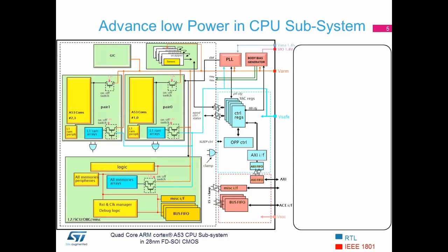An important thing to understand is that, unlike normal SoCs, CPUs are general-purpose processors, which means the load on the CPU may vary depending on the application. To achieve very high energy efficiency, we must have a varied range of frequencies and corresponding voltages so that we can optimize overall energy consumption. Therefore, we have extreme DVFS — dynamic voltage and frequency scaling. We can operate at 0.6 volts and achieve around 1 GHz performance, thanks to FTSOI technology.